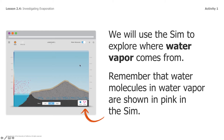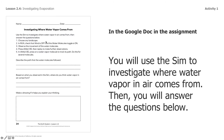When you go to use the sim, you're going to see it looks like this. I want you to remember that water molecules in water vapor are shown in pink here in the sim. You'll see them over here. You are going to have in your Google Doc the directions for how to do the sim, and then afterwards you're going to answer some questions. The sim is going to help you investigate where water vapor in the air comes from.